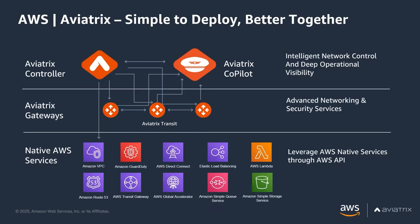To understand a couple of the components here, we have the Aviatrix controller, which you can think of as the brain of operations. It's talking to our own gateways, which are providing the advanced networking and security capabilities, but it's also talking to the native services via the AWS native API. So we can take advantage of all of the cloud-native capabilities that are there and then deliver a lot of the advanced services on top of that.